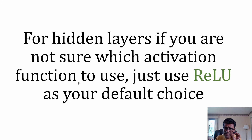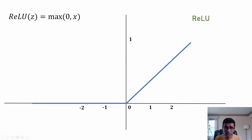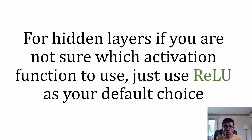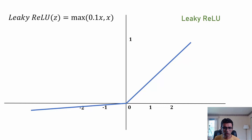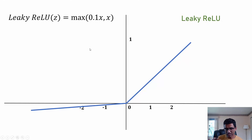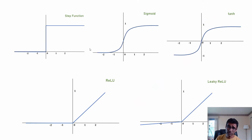ReLU also has a vanishing gradient problem because when the value is less than 0, the derivative is again 0. For this reason, there is another variant called Leaky ReLU, where instead of outputting 0 for negative values, the equation is 0.1 times x — still reducing the value close to zero but not completely zeroing it out. Leaky ReLU can be a good choice depending on the circumstances.